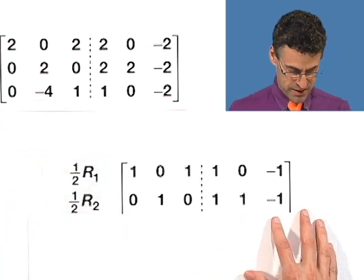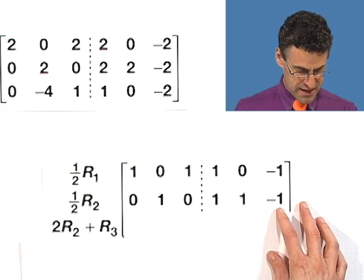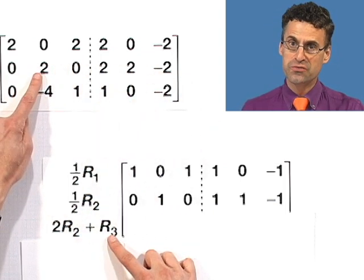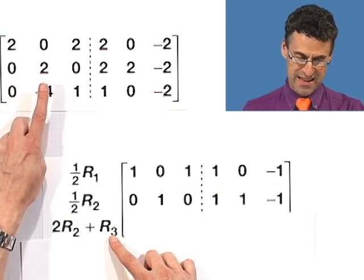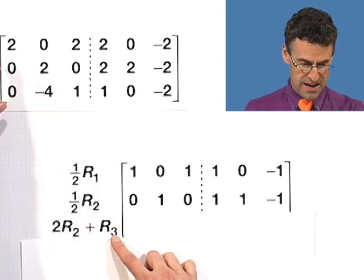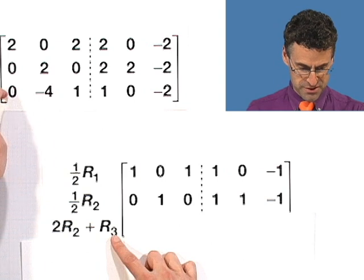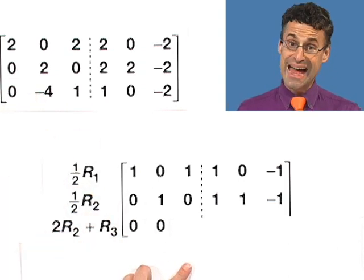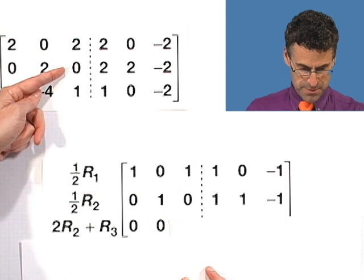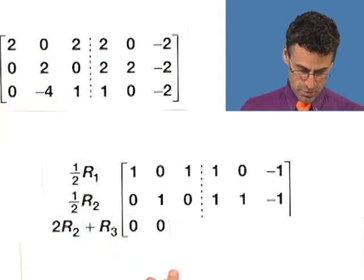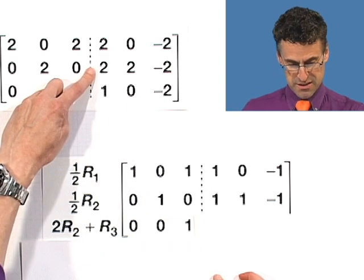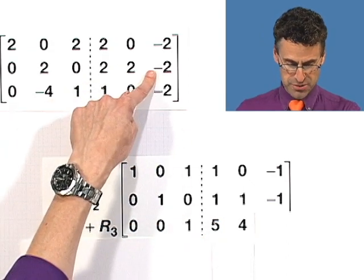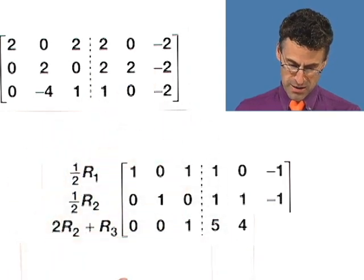And now I really want to get that 0 there. So how do I do that? Well, check out what I'm going to do. I'm going to take 2 times the second row, and add it to the third row. 2 times 2 is 4, and when I add it to the negative 4, I get 0. And that's exactly what I want. And notice that by doing that, nothing is disruptive here, because everything incites a 0. 0 times 2 is 0, plus 0 is 0. So we're good to go. And now 2 times 0 is 0, plus 1 is 1. And we keep doing this. 2 times this is 4, and 1 is 5. 2 times this is 4, plus 0 is 4. And 2 times this is negative 4, minus 2 is negative 6.